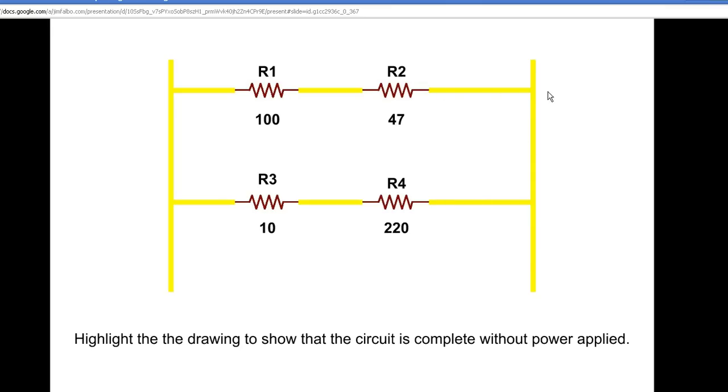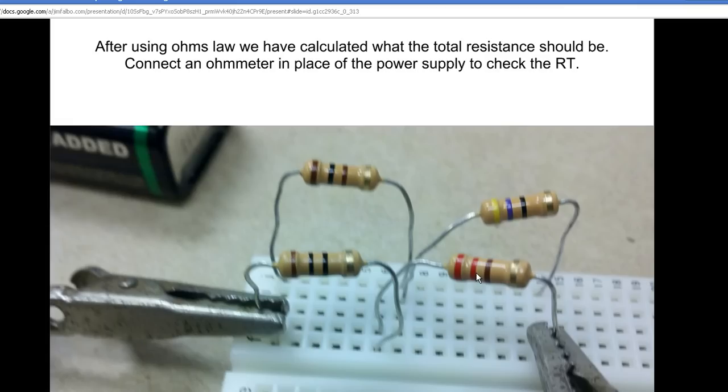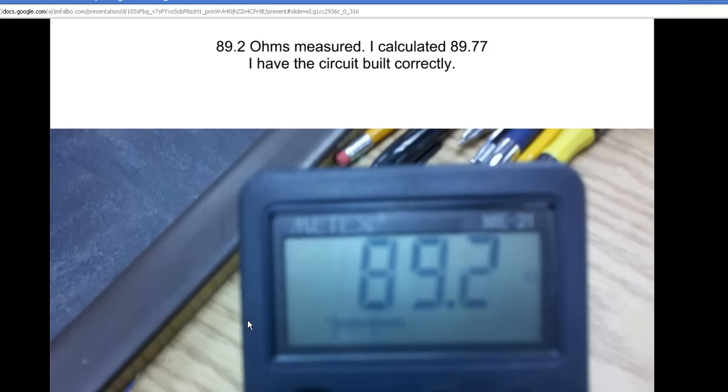Row 14 is all tied together, so I've tied this in with R2 and I can highlight that accordingly. Now I need to check to see: did I make this circuit correctly before I apply power? We're going to use Ohm's law to determine what our total resistance should be and connect our ohmmeter up in place of where our power would be.